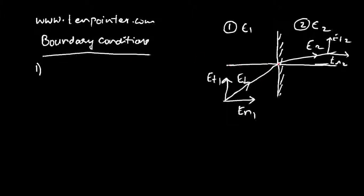The tangential components of electric field intensity are Et1 and Et2. Et1 and Et2 are continuous across the dielectric interface. Mathematically, this means Et1 is equal to Et2.